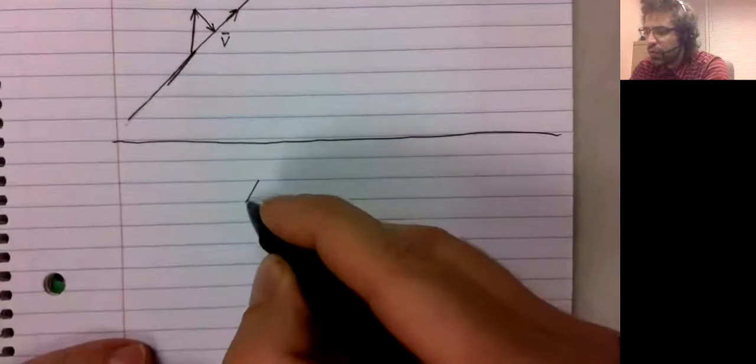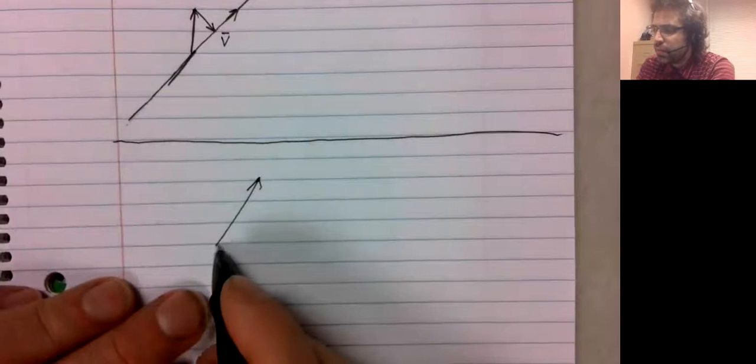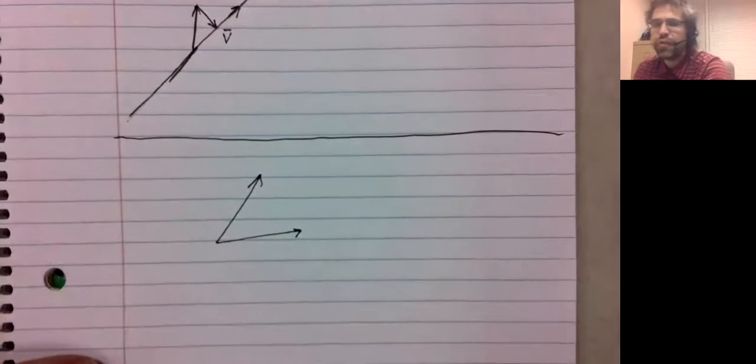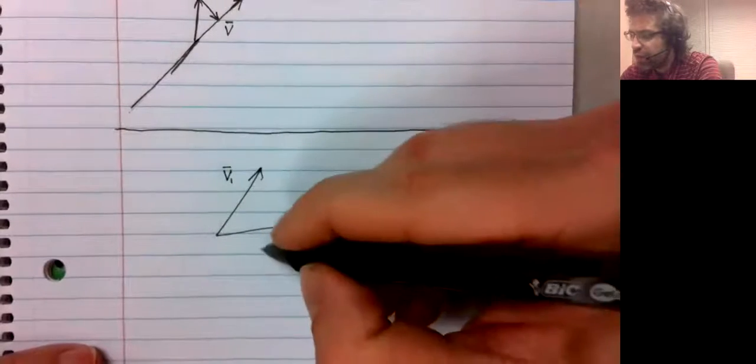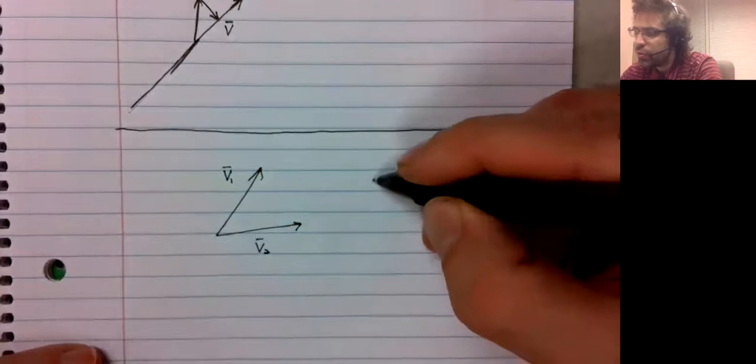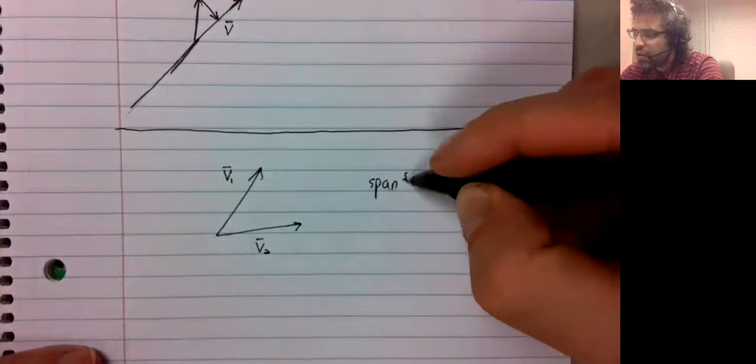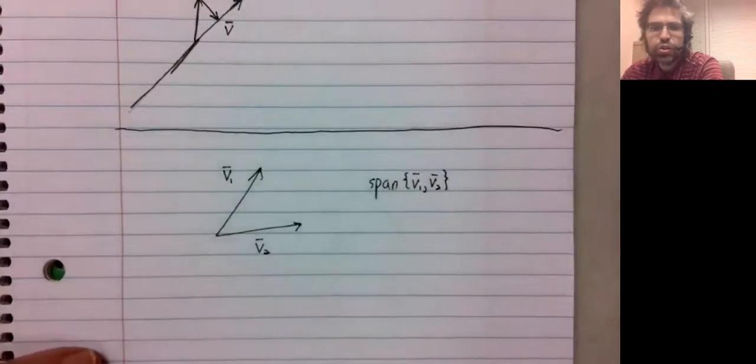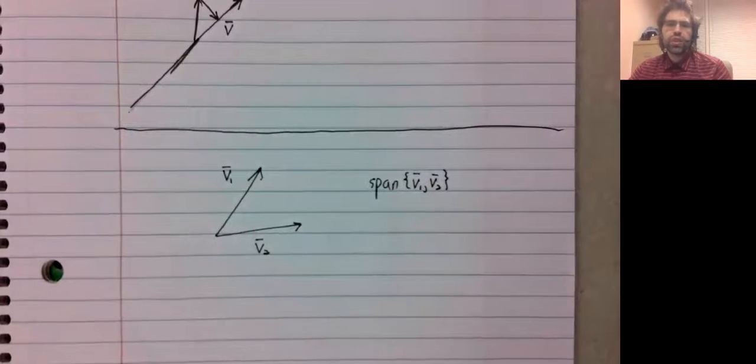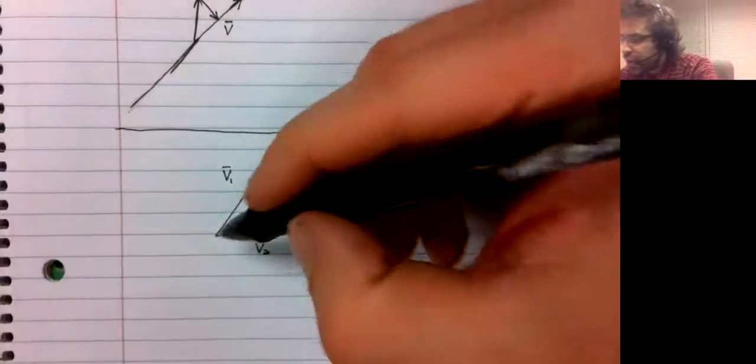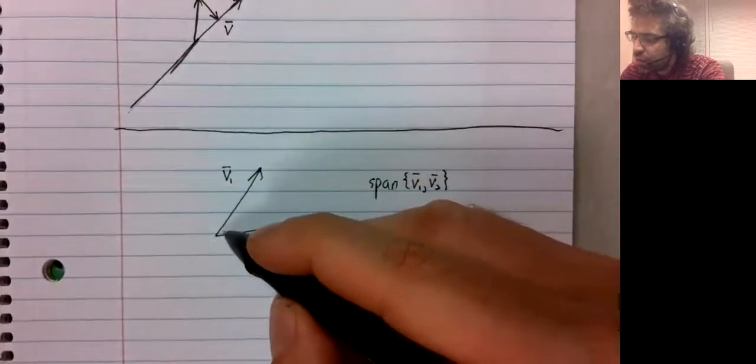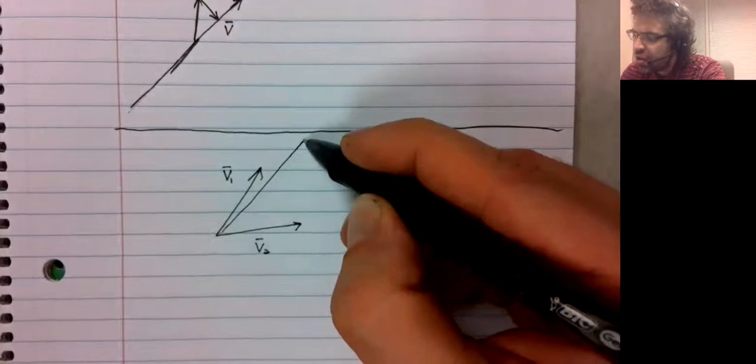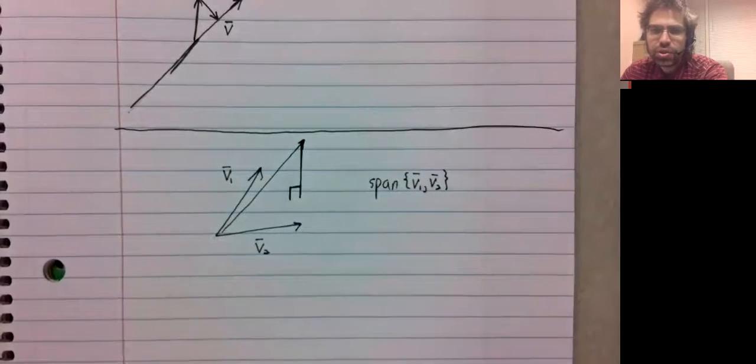Now, moving into R3. Suppose you have two vectors, V1 and V2. You can look at the span of V1 and V2, and the result is a plane. And if you have a third vector, a vector that isn't in the plane, you could project it orthogonally onto the plane.